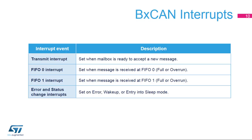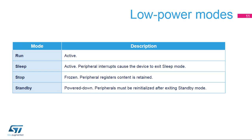Here is a summary of CAN interrupt events: transmit, receive buffers for FIFO 0 and FIFO 1, and error and status change interrupts.